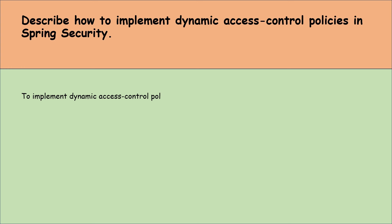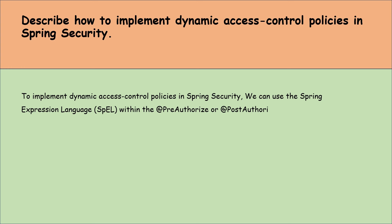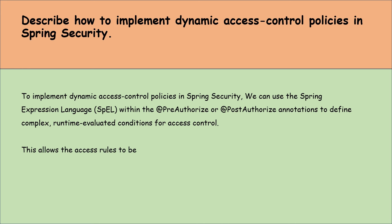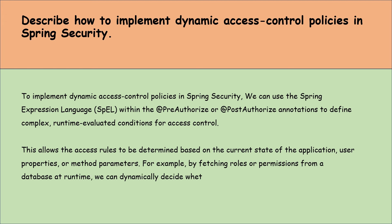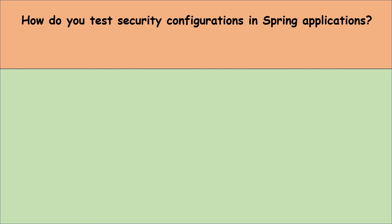Describe how to implement dynamic access control policies in Spring Security. To implement dynamic access control policies, we can use Spring Expression Language within the @PreAuthorize or @PostAuthorize annotations to define complex, runtime-evaluated conditions for access control. This allows access rules to be determined based on the current state of the application, user properties, or method parameters. For example, by fetching roles or permissions from a database at runtime, we can dynamically decide whether a user can access a specific method or resource, allowing for more flexible and context-sensitive security policies.